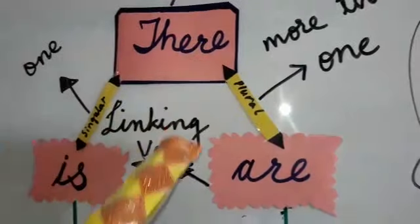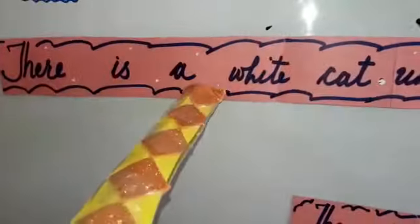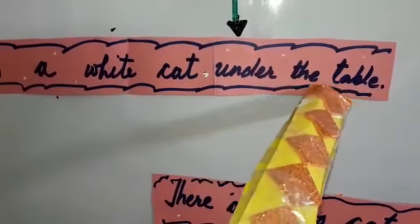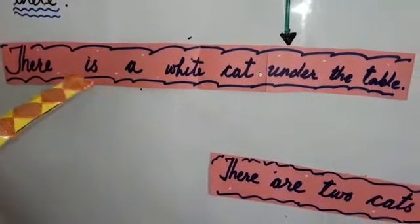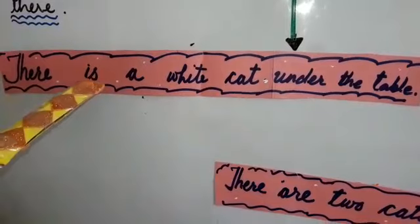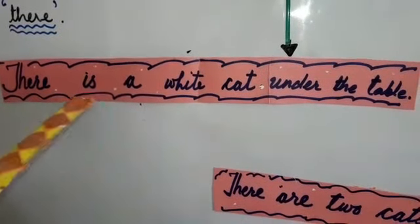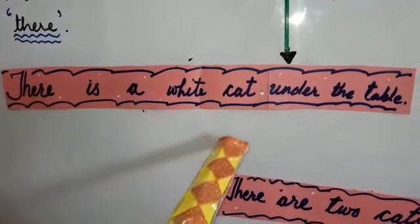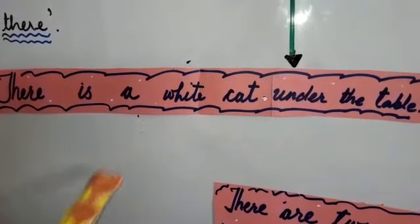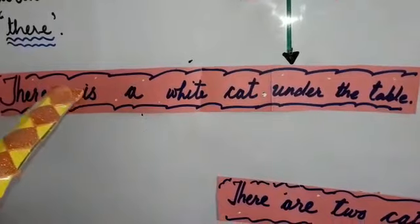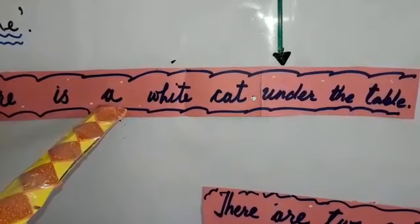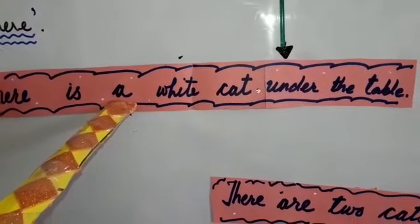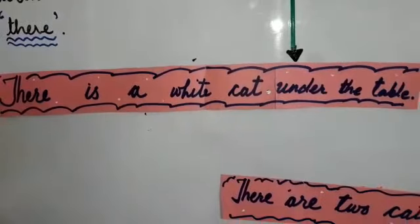Now let's have an example here. 'There is a white cat under the table.' This 'there' is indicating 'under the table'. So 'there is a white cat under the table' means: there is a white cat, where? Under the table. How many cats? Simply one cat. The article 'a' shows one — singular. Okay.